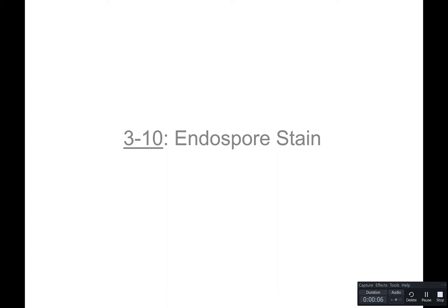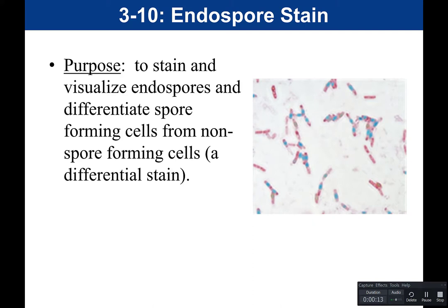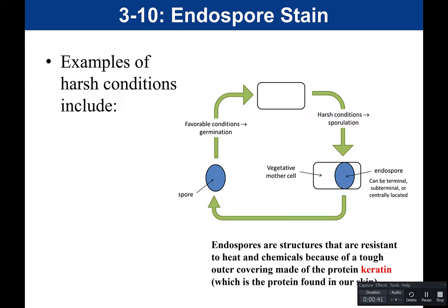In this video, we're going to talk about the endospore stain, activity 3-10. The purpose of the endospore stain is to stain and visualize endospores and differentiate spore-forming cells from non-spore-forming cells. This is a differential stain — just like the gram stain and the capsule stain are differential stains — it's going to differentiate between bacteria that produce endospores and those that don't.